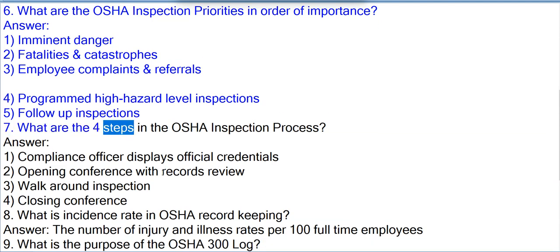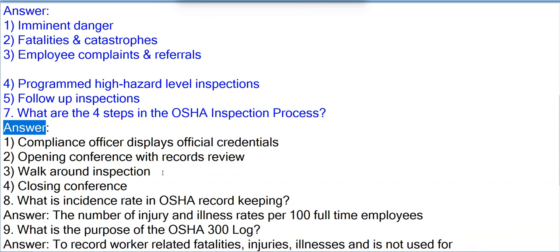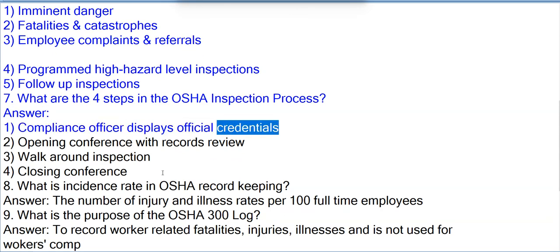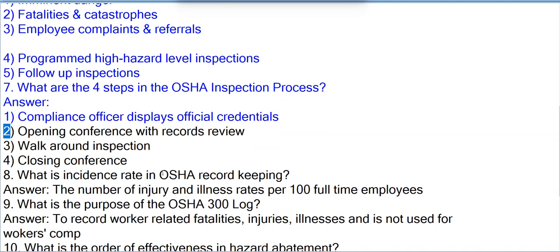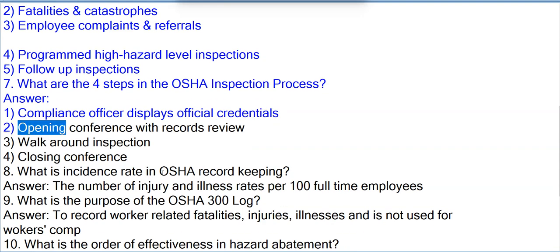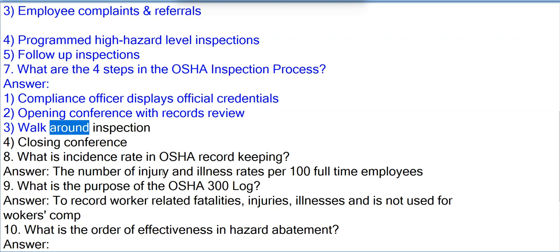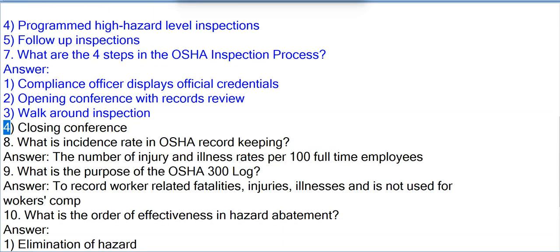Question 7: What are the four steps in the OSHA inspection process? Answer: 1. Compliance officer displays official credentials; 2. Opening conference with records review; 3. Walk-around inspection; 4. Closing conference.